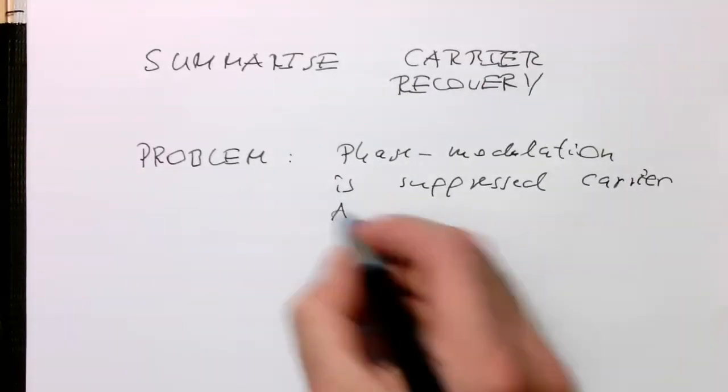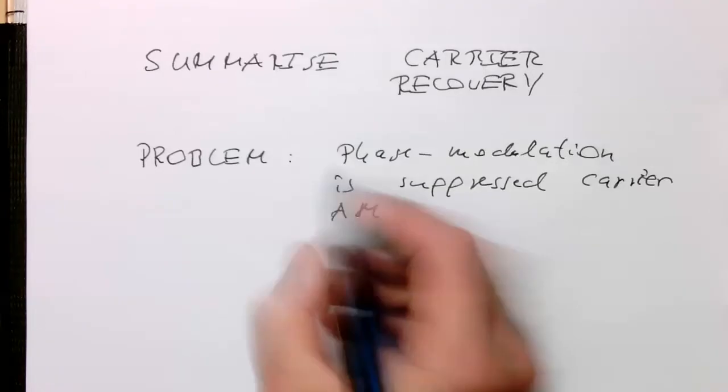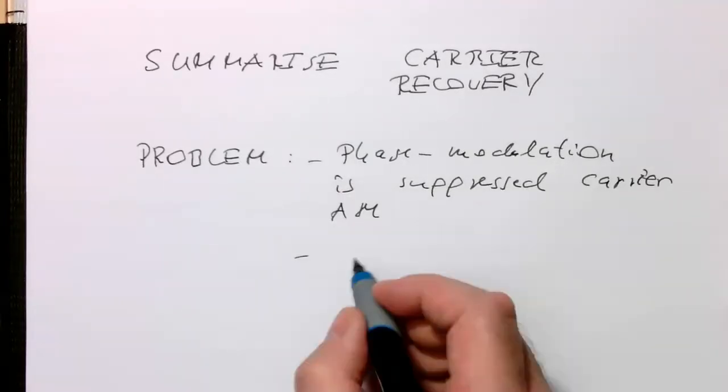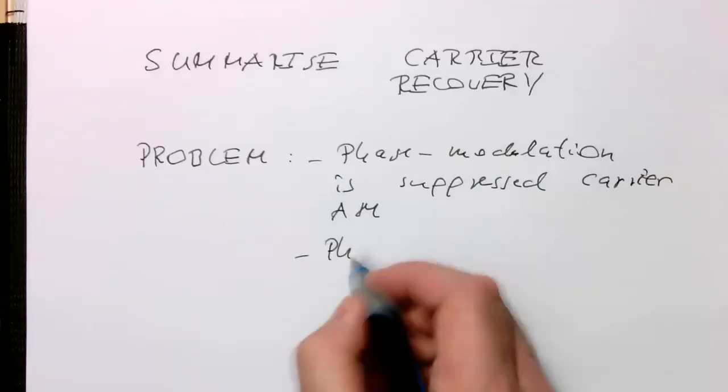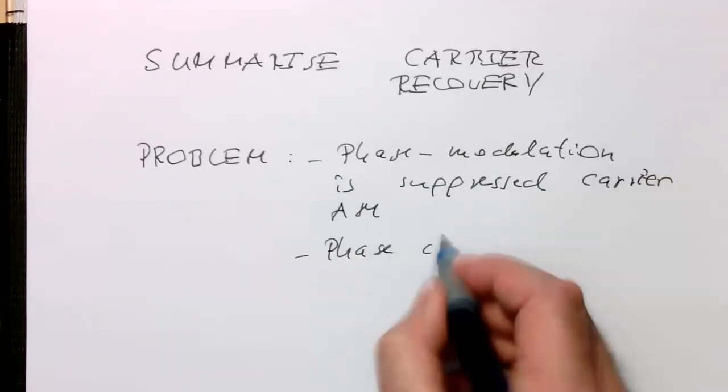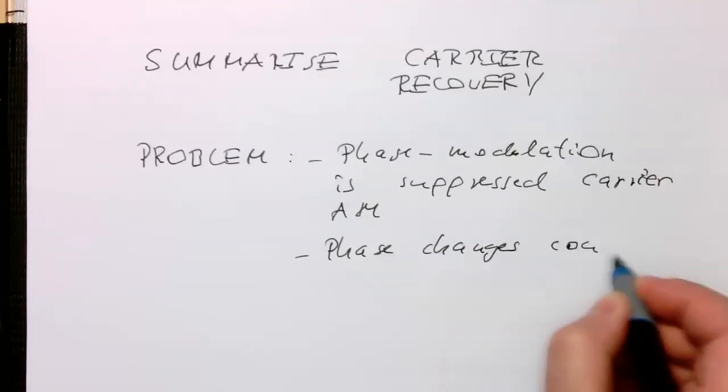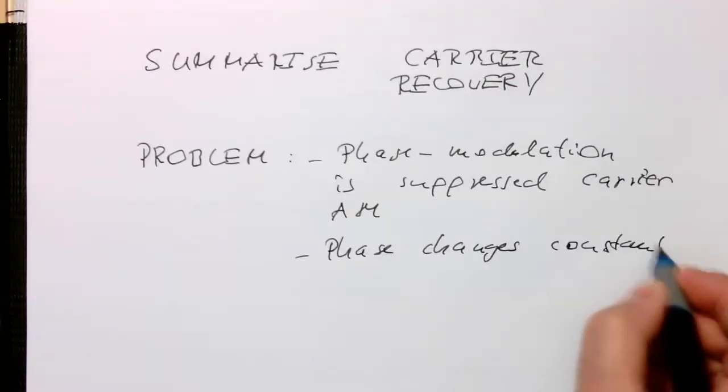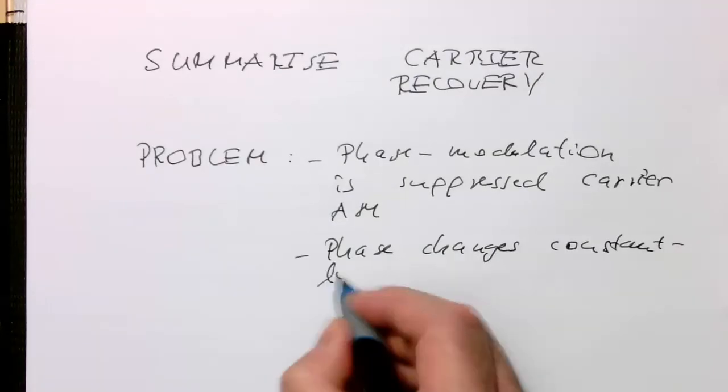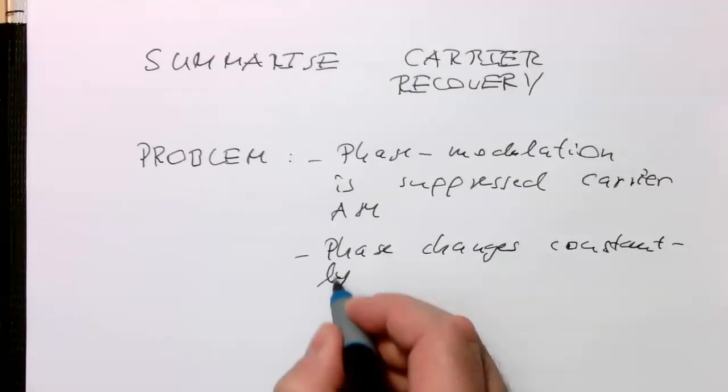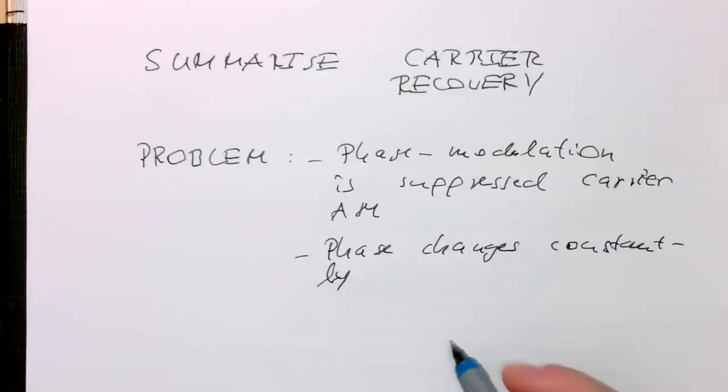In other words, the phase is changing constantly, and with that, obviously, a PLL cannot lock on it. Phase changes constantly. We've seen that there are phase jumps in there, so a PLL would be messed up by this. So there are three solutions I've presented.